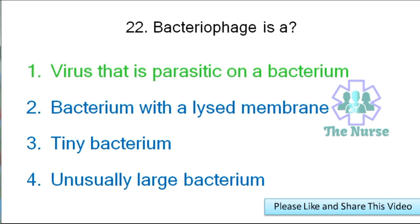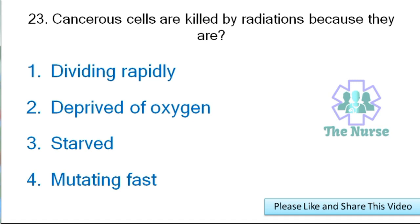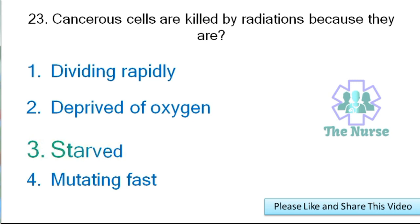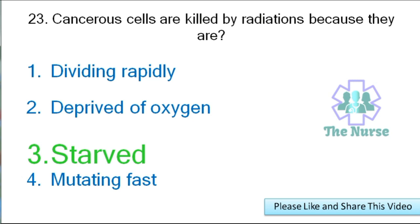Next question: Cancerous cells are killed by radiations because they are — dividing rapidly, deprived of oxygen, starved, or mutating fast? Correct answer: starved. Cancerous cells are starved, and because of this radiation is effective.